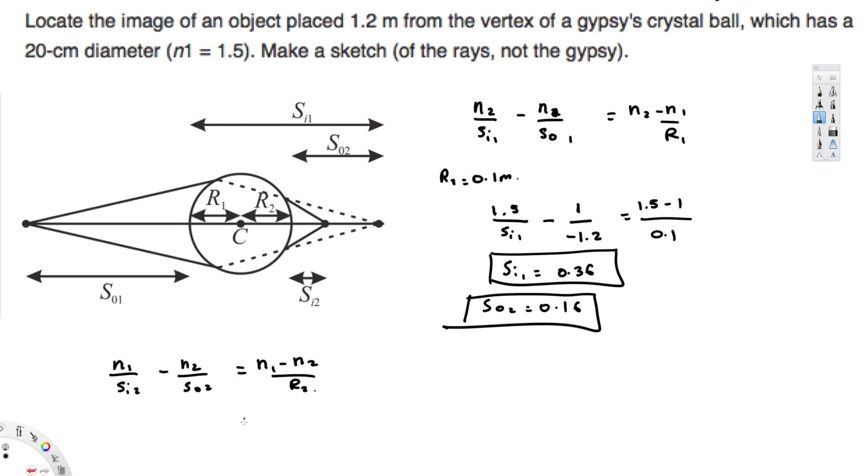So we can plug it here and find the final answer. So this is going to be 1/sᵢ₂ minus 1.5/0.16 is equal to negative 0.5 divided by negative 0.1. And that's going to give us sᵢ₂ is equal to 0.07 meters. In centimeters, that's going to be 7 centimeters.